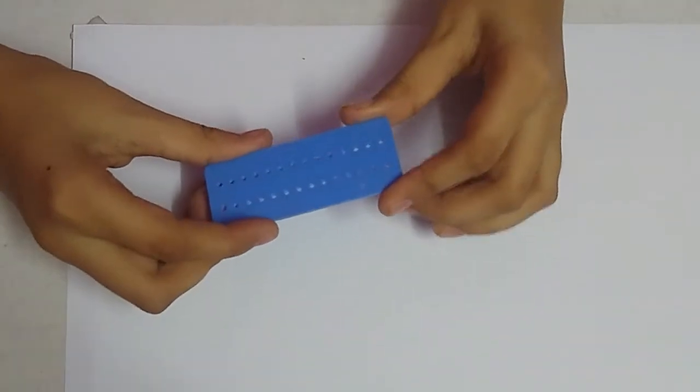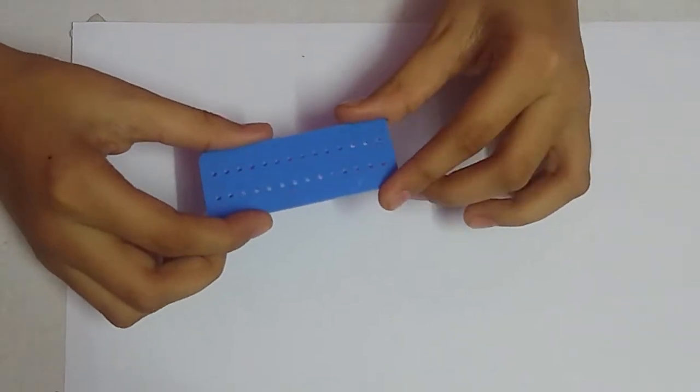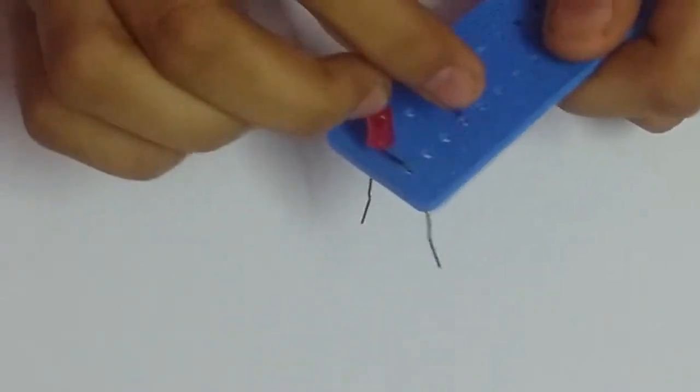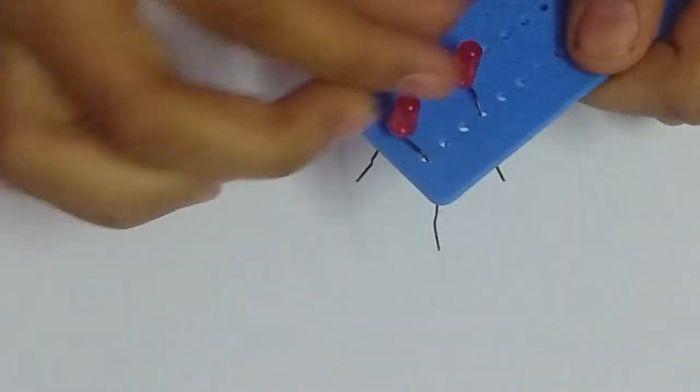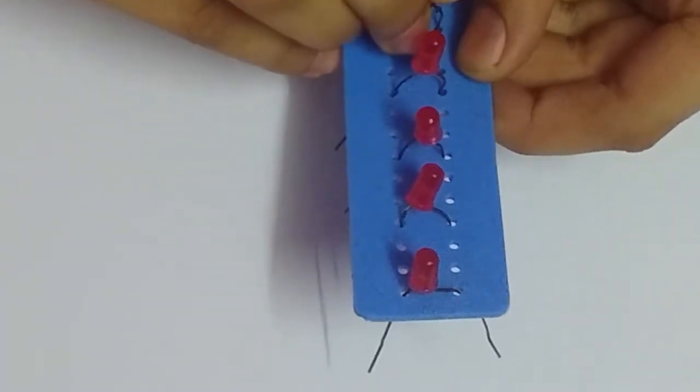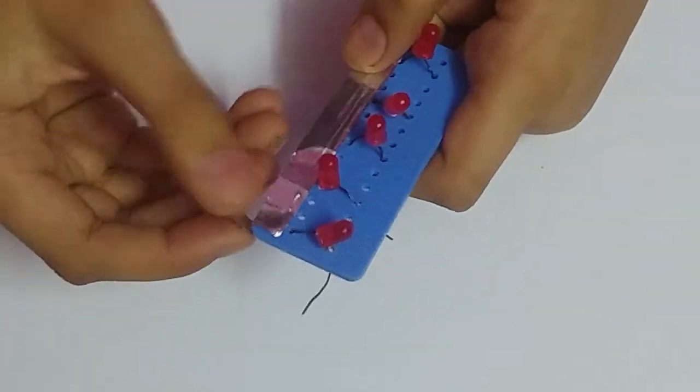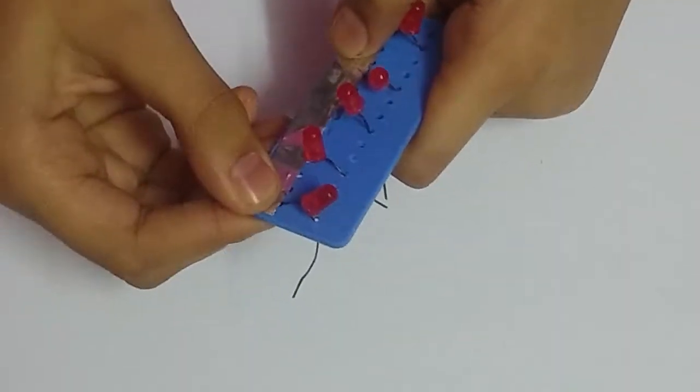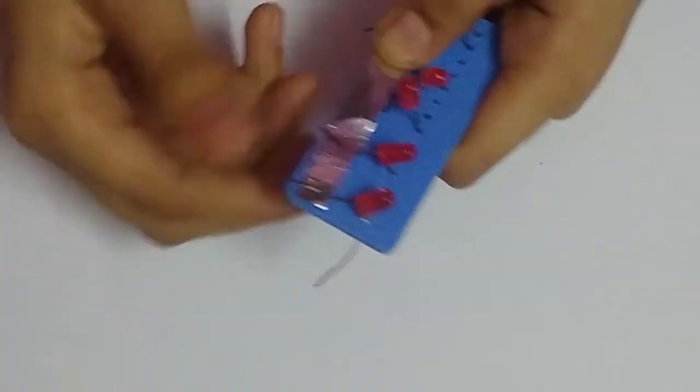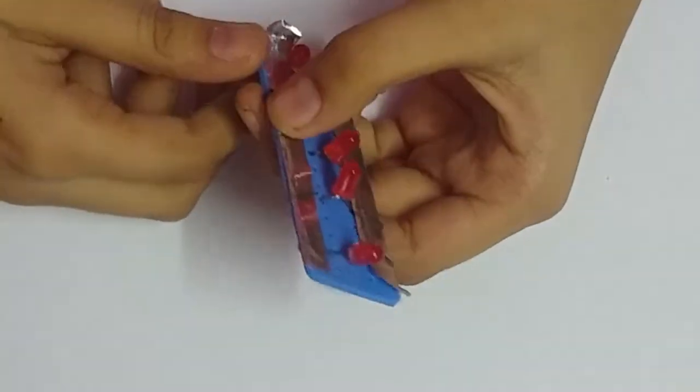Make small holes in the piece of plastic to insert the LED. Insert the LED at the gap of two holes. Make sure all positive LED are on one side and negative on the other. Place the aluminum strip like this and attach it to the bulb.